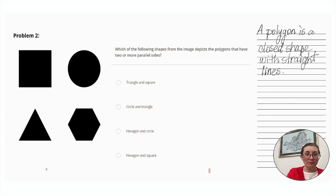Which of the following shapes from the image depicts the polygons that have two or more parallel sides? Let's look at the definition of a polygon. A polygon is a closed shape with straight lines. So right away, that eliminates the circle. A circle has no straight lines, and we can cross off and eliminate any answers with circle in it. So that leaves us with triangle and square or hexagon and square.